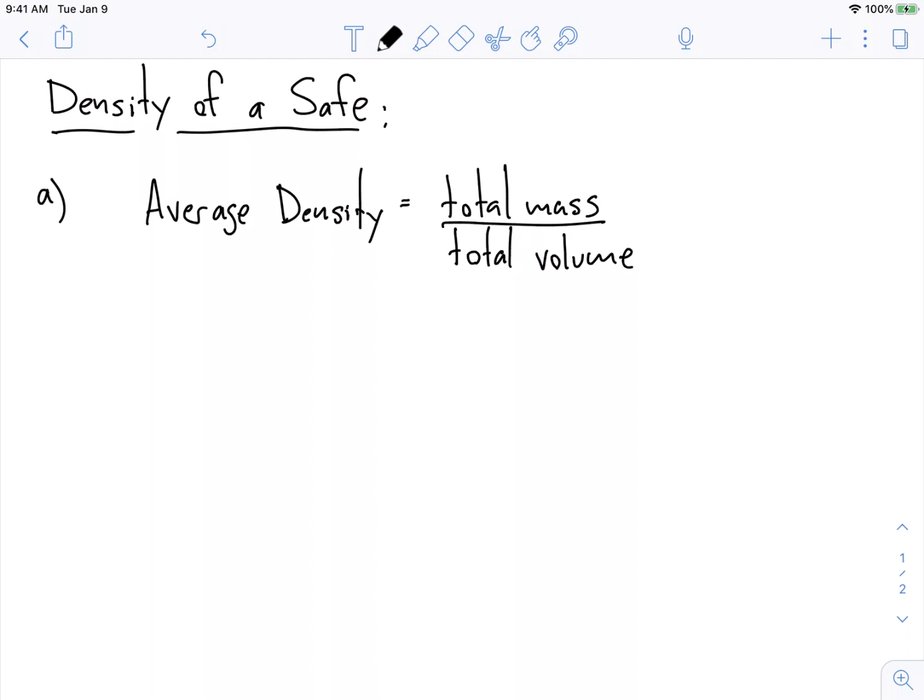Right, and so usually, you know, the total mass—what is our safe made of? Well, it's made of some iron and it's made of some air. We're just going to divide that by the total volume of the safe.